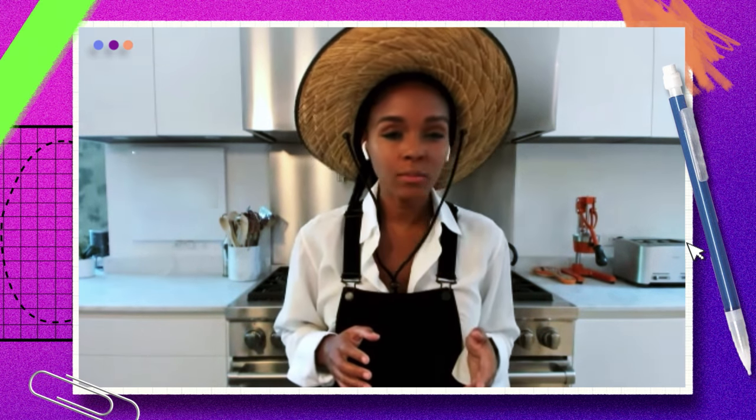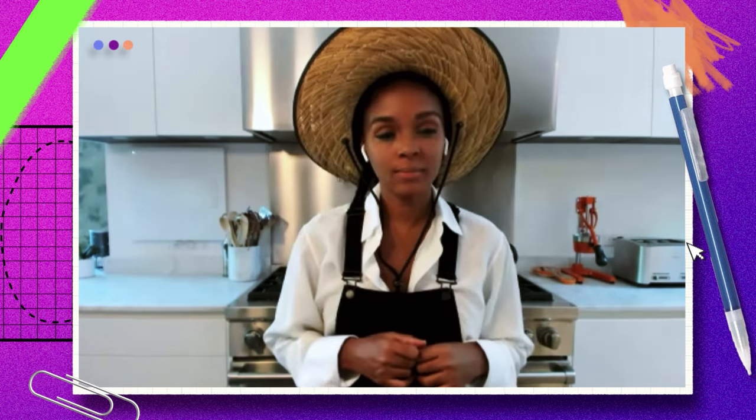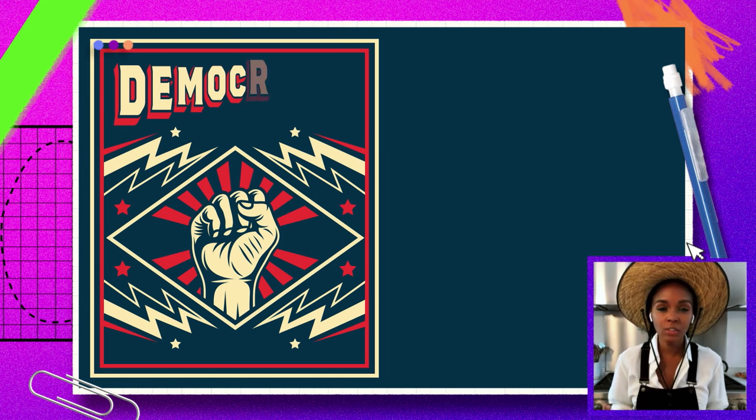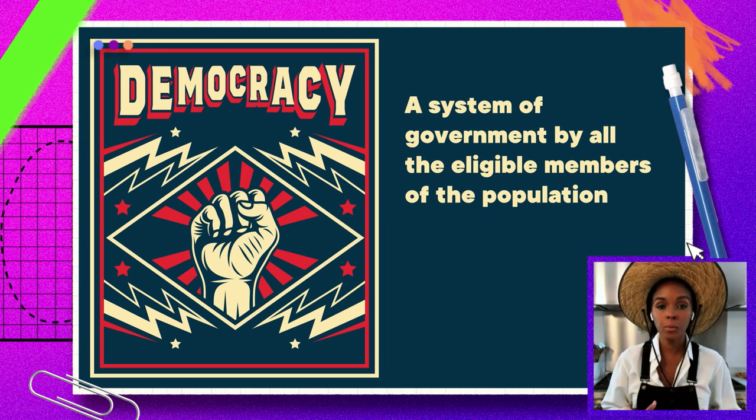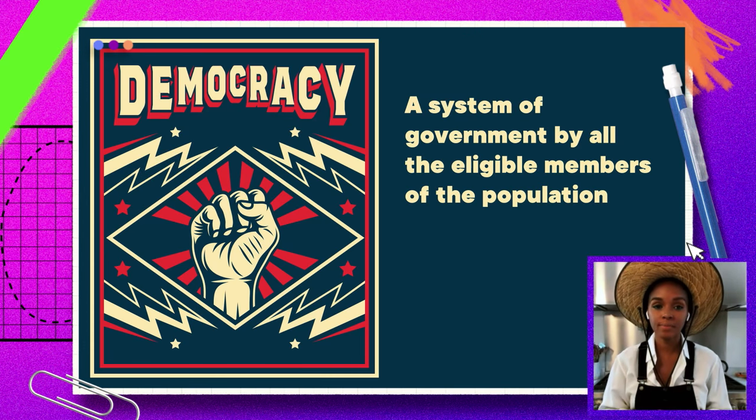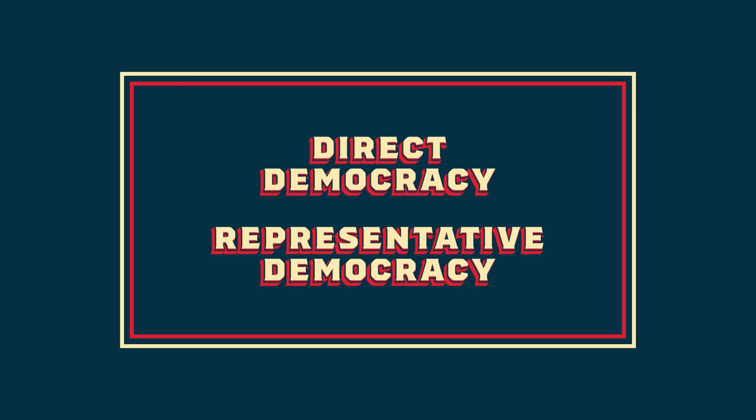Why has basically no one ever actually voted for president? In order to understand that, you need to first understand the United States system of government. We're all aware that the U.S. is a democracy. The definition of democracy is the system of government by all the eligible members of the population. There are many ways to organize a democracy — the same way there are many ways to bake a cake — but democracies fall into two main categories.